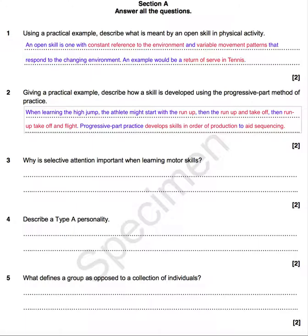Here's my answer. When learning the high jump — there's the practical example — the athlete might start with the run-up, which is the first part of the skill. Then the run-up and take-off, which is two parts in chronological order. Then the run-up, take-off, and flight, and of course the landing and movement over the bar. Progressive part practice develops skills in order of production to aid the sequencing of that skill. You must mention developing skills in order of production to aid sequencing, and you must use an effective practical example.